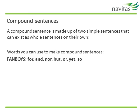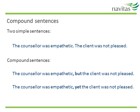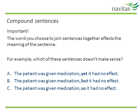Let's take a look at some example compound sentences using these linking words. We have two simple sentences: 'The counsellor was empathetic' and 'the client was not pleased.' You can join these with BUT: 'The counsellor was empathetic, but the client was not pleased.' Or you could use YET. As you can see, both linking words mark a contrast. Note the comma before the linking word. Keep in mind you can't just use any FANBOYS linking word — it has to show the correct relationship between the information. Take a look at the example on the slide and work out which one doesn't make sense. Sentence C does not make sense.